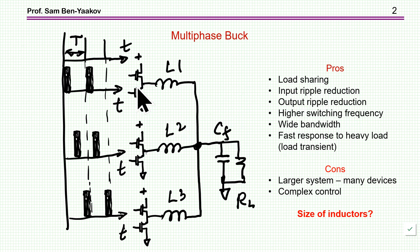There is load sharing, of course. Each unit is carrying a proportionally lower current. Input ripple reduction, output ripple reduction. There is possibility to go to a higher switching frequency, get a wider bandwidth, and also there is a fast response to heavy load transient. For example, if the current is increasing momentarily, we can connect these actually in parallel, that is to operate them at the same time. By that we get like a smaller equivalent inductor, and therefore the slew rate will be much higher, and we can very quickly supplement the required current. And of course the cons are that it's a larger system, more expensive, and the control is complex.